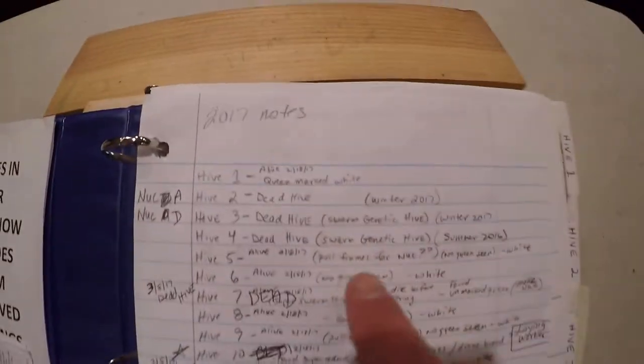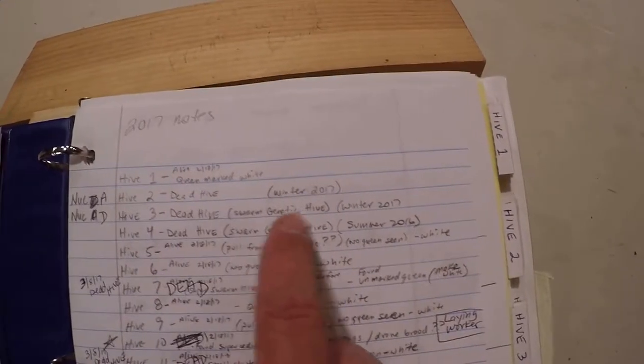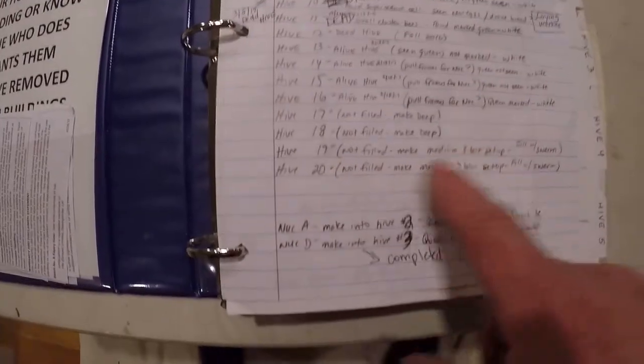My alive hives, the dead hives, dead outs, swarm genetic hive, just hive number one through 20. Some of these haven't filled out yet. Some of the plans I have.